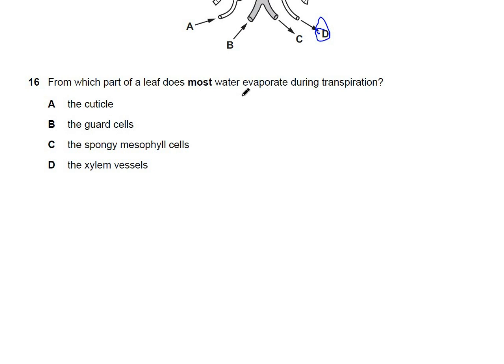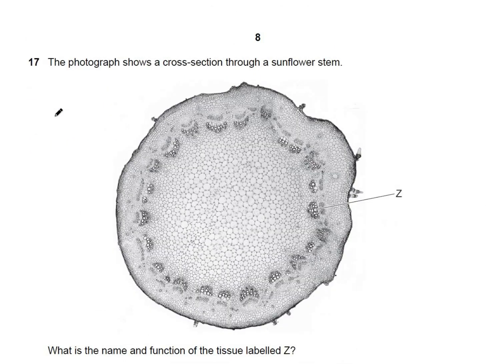Question 16: from which part of a leaf does most water evaporate during transpiration? The cuticle prevents excessive transpiration. Guard cells are not the answer. Spongy mesophyll cells have very large air spaces which allow water to evaporate. The answer is C.